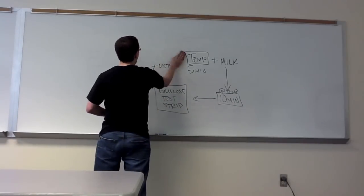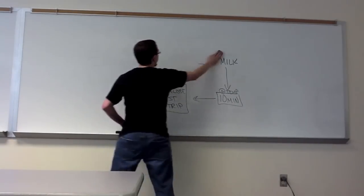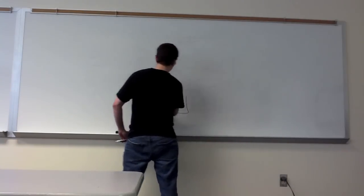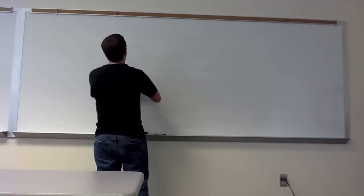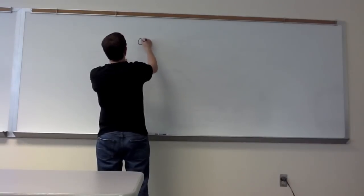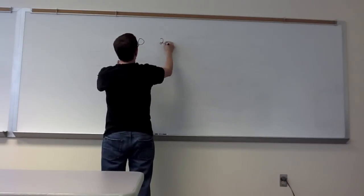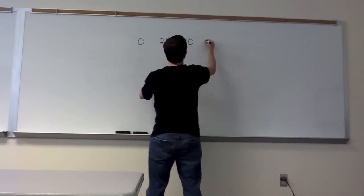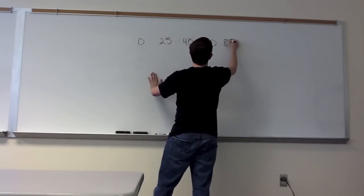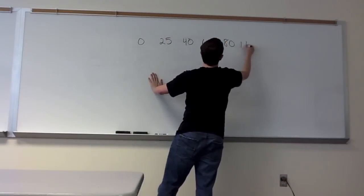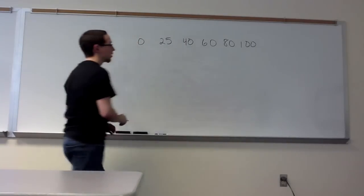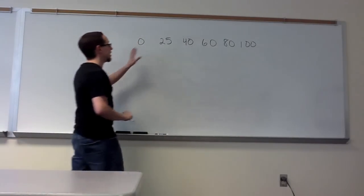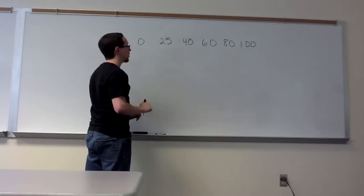Let's talk about the different temperatures we looked at. We did a tube at 0°C, one at 25°C, one at 40°C, one at 60°C, one at 80°C, and one at 100°C. Let's talk about what we expected to see in each of these tubes.